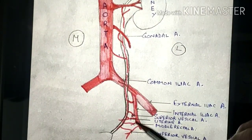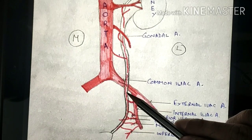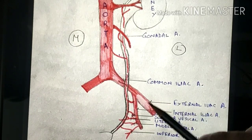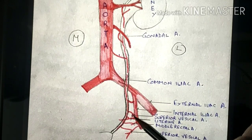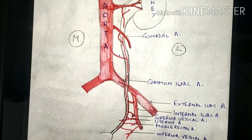The lower portion of the ureter is supplied by branches from the internal iliac, the superior vesicle, uterine, middle rectal, and inferior vesicle arteries.